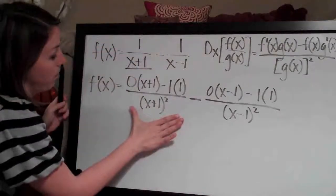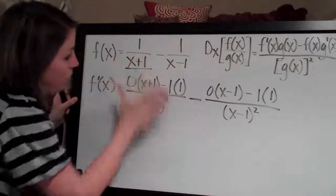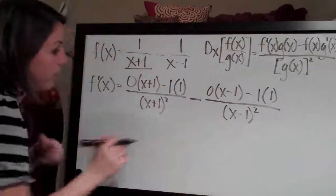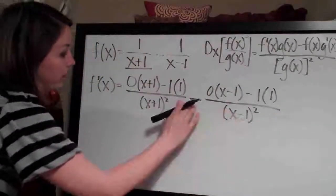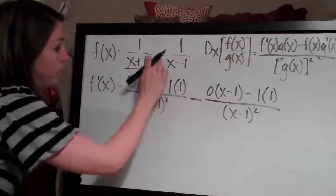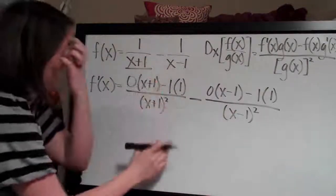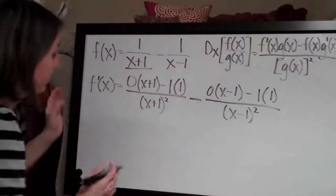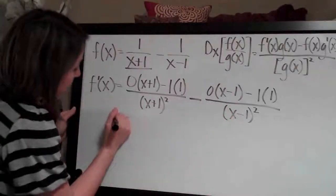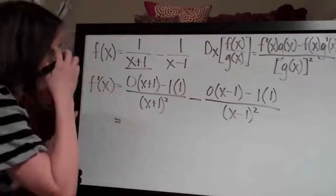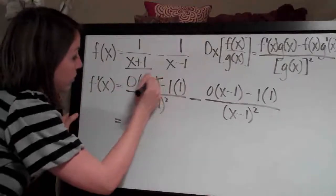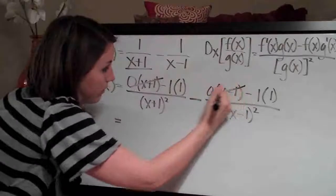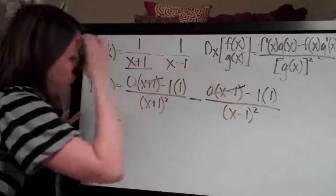This part is for 1 over x plus 1, and this part is for 1 over x minus 1, and we're subtracting this one from that because the original function tells us to subtract. We've got our whole formula written out and now we just need to simplify. The 0 gets rid of this whole term because it's multiplied by 0 — same here, this whole thing cancels.